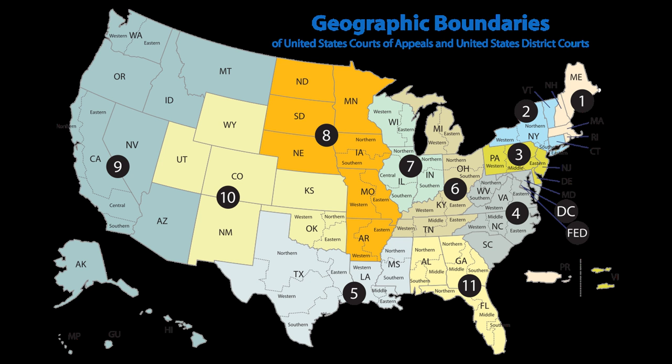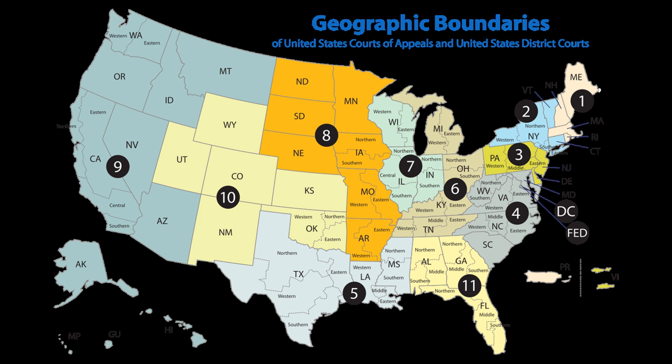During the Morris appeal process, the U.S. Court of Appeals estimated the cost of removing the worm from each installation at between $200 and $53,000. This work prompted the formation of the CERT coordination center and phage mailing list. Morris himself became the first person tried and convicted under the 1986 Computer Fraud and Abuse Act.